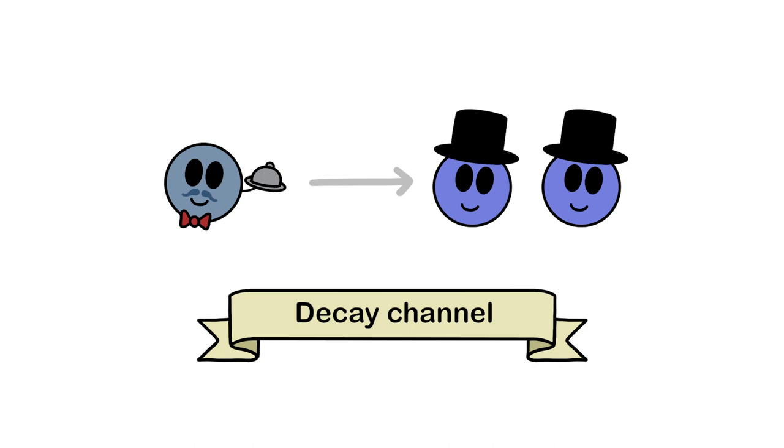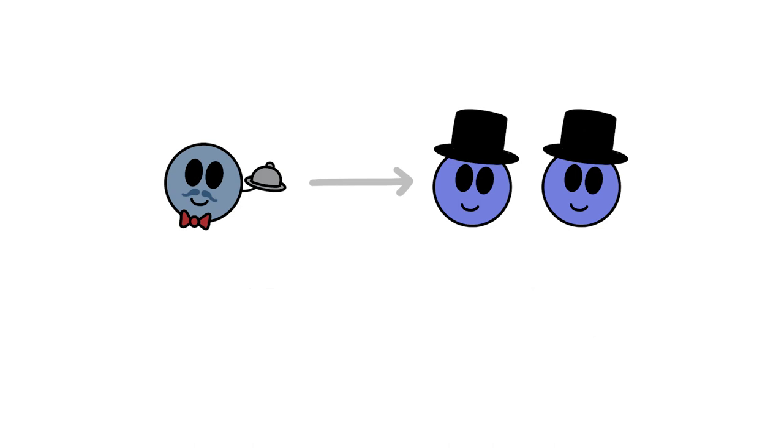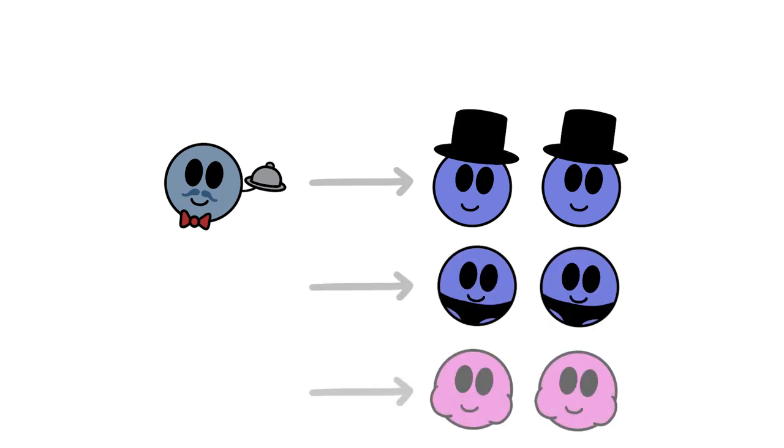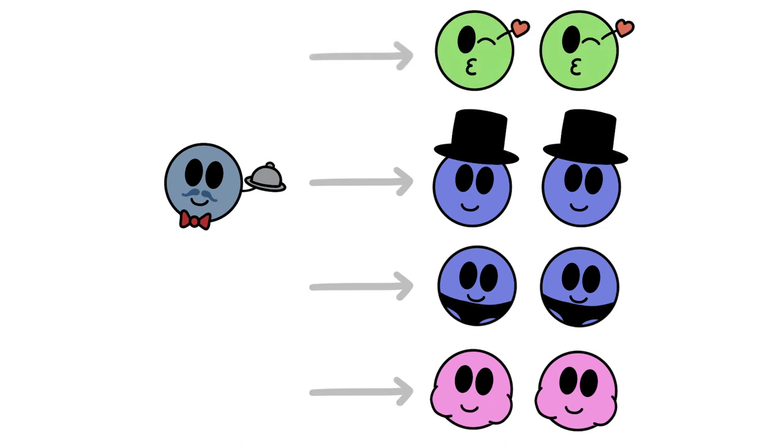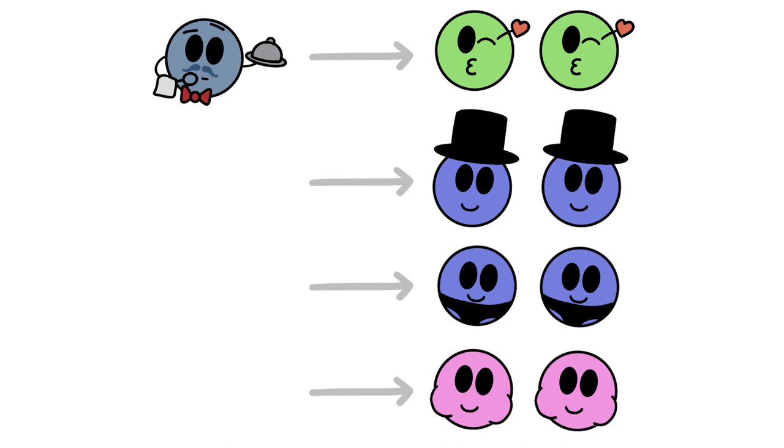The decay to two top quarks is one of these decay channels for the Higgs particle, but there is also a channel in which the Higgs decays to two bottom quarks, a channel to two muons, a channel to charm quarks, and many, many more. The problem? We can't predict which channel is chosen. It is, to a certain degree, random.